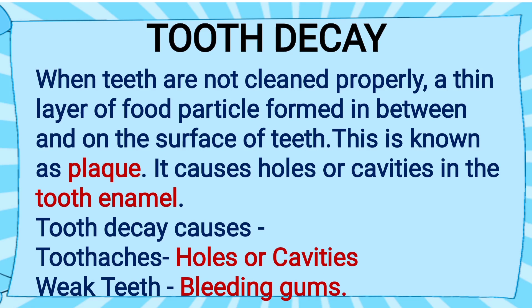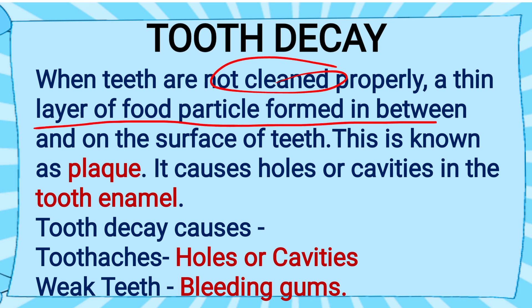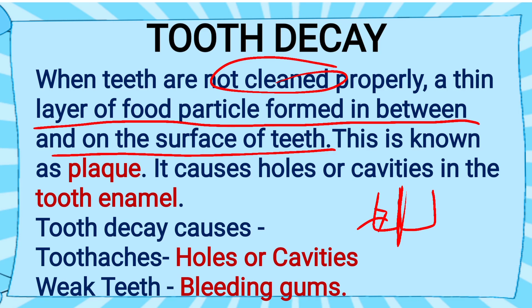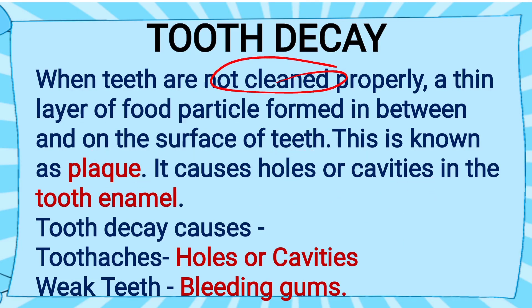Now let's talk about tooth decay. When we do not clean our teeth properly, there is a layer of food particles that forms between and on the surface of the teeth. This layer settling down is known as plaque. It causes holes and cavities in the teeth enamel, leading to toothache. It also makes our teeth weak, which can cause bleeding gums.